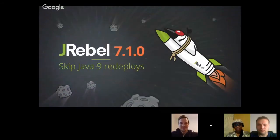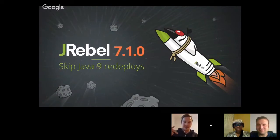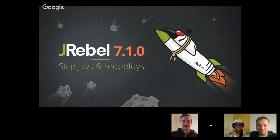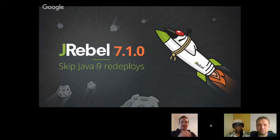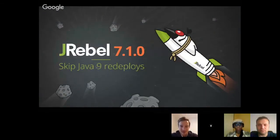JRebel is a productivity tool for Java developers. What it does is allow you to eliminate the redeploy phase — you avoid restarting the server all the time. It picks up changes that you make to your code base and reflects them in the running application immediately, so you are way more productive as a developer because you don't waste time. You should totally check it out because it's amazing.